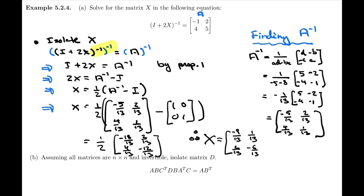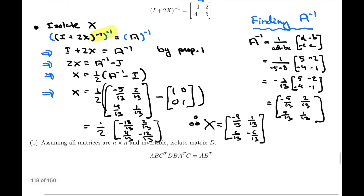After a quick check — confirming all signs are correct — we can multiply in the one half to obtain the final answer: X equals the matrix [negative 9/13, 1/13; 2/13, negative 6/13]. That's our final answer for solving equation A.